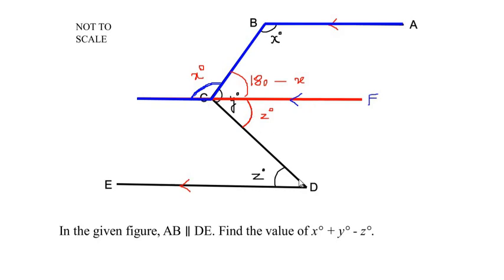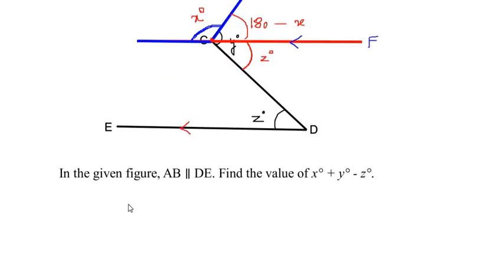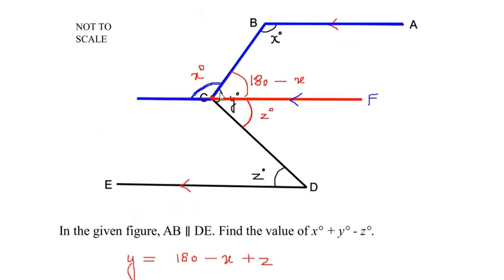The alternate angles of parallel lines CF and ED are intercepted by transversal line CD. Now since at point C we had angle y, angle y becomes the total angle, that is (180° − x) + z. So we write: y° = 180° − x + z.